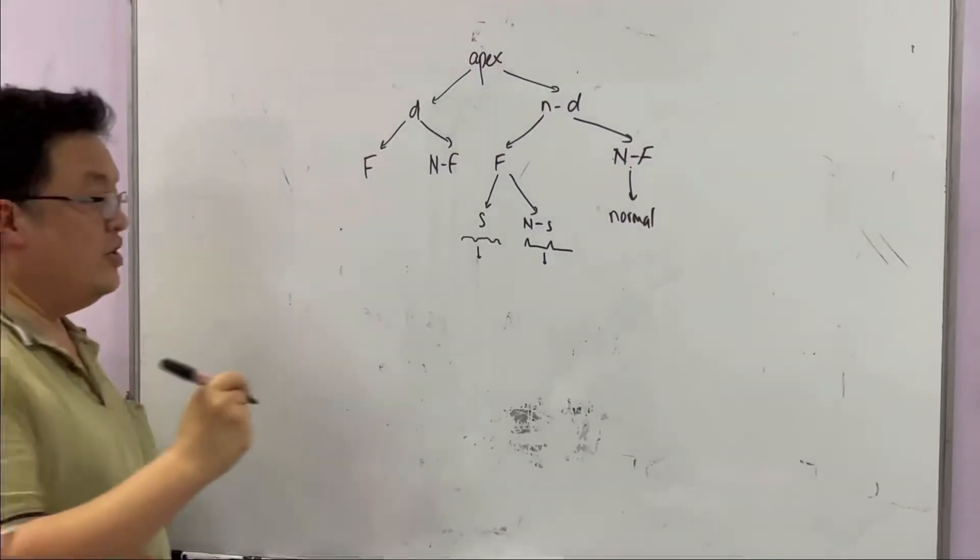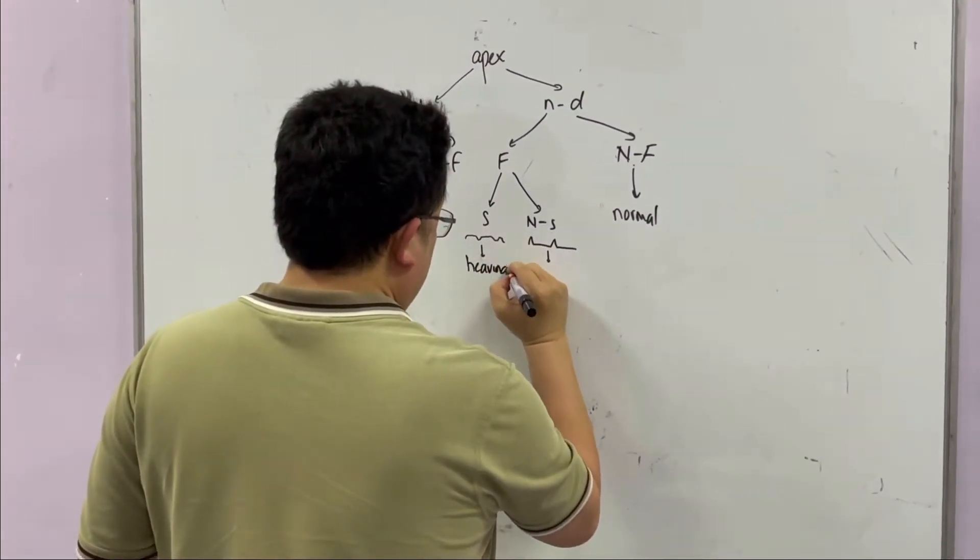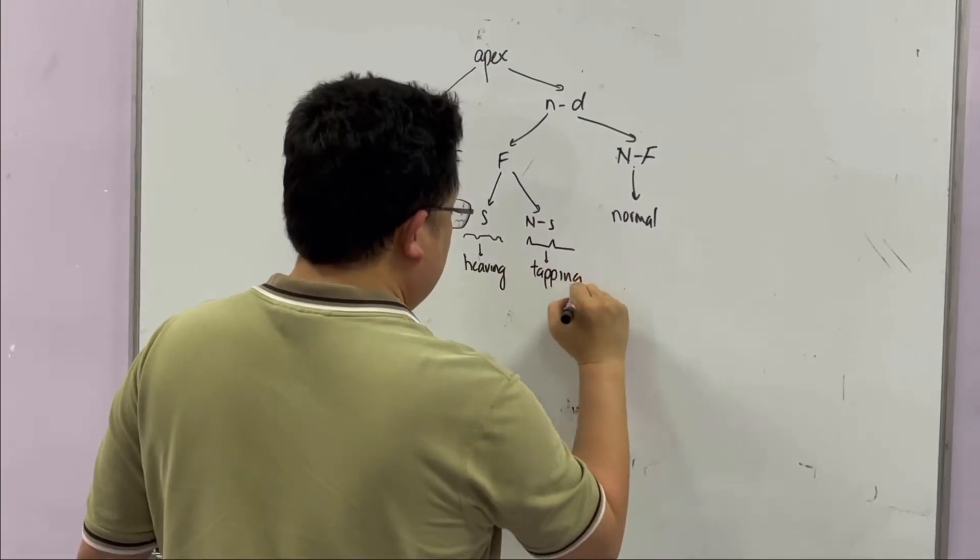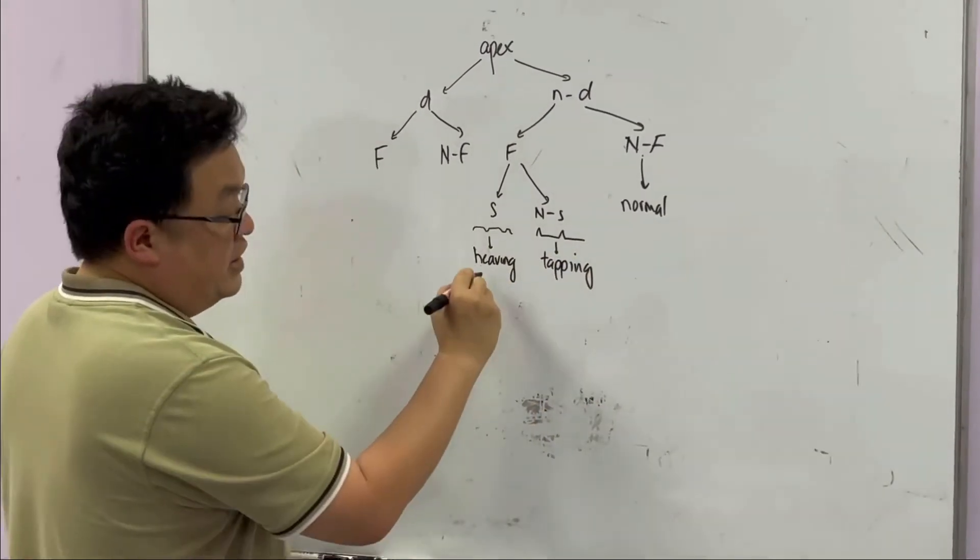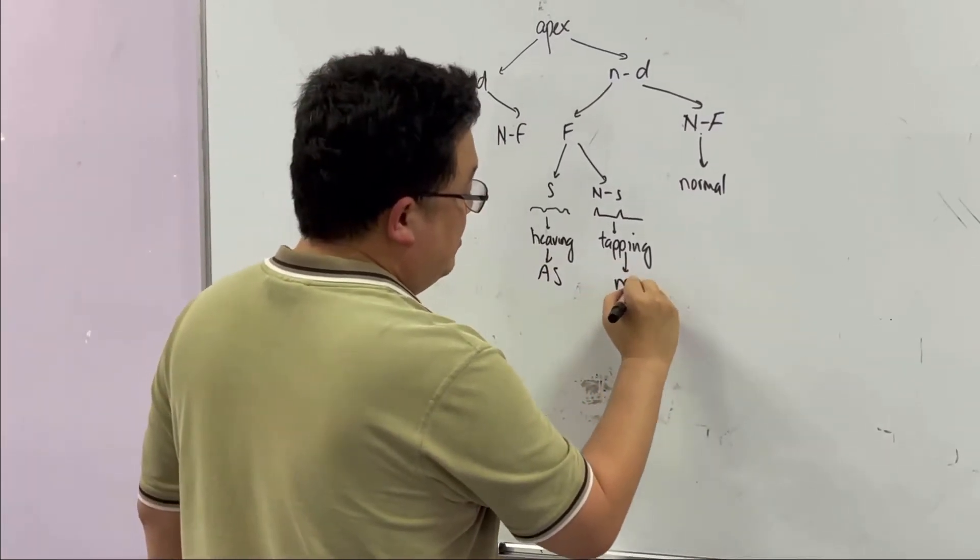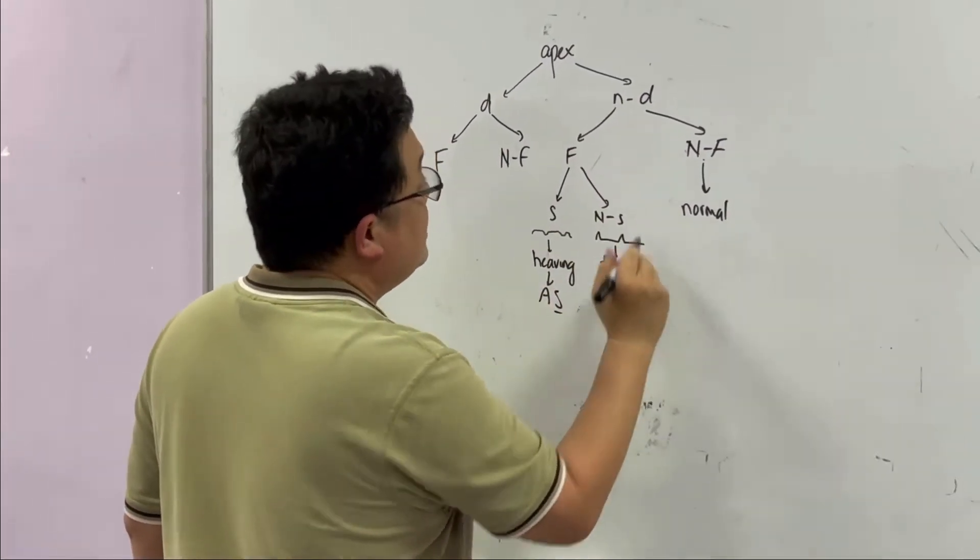This is your heaving apex beat. If it's not sustained, it's tapping. Heaving is seen in aortic stenosis. Tapping is seen in mitral stenosis. Notice that all the stenoses are not displaced.